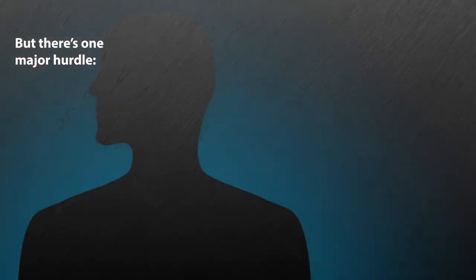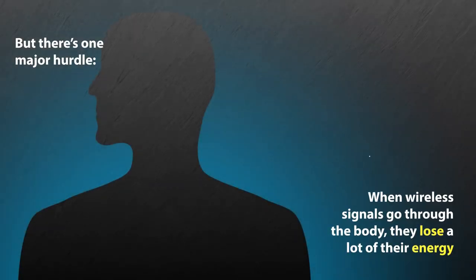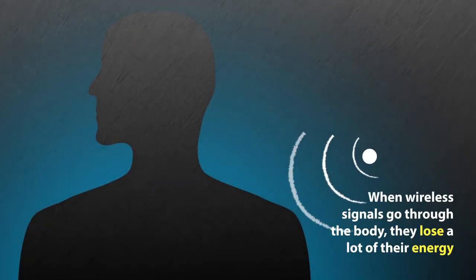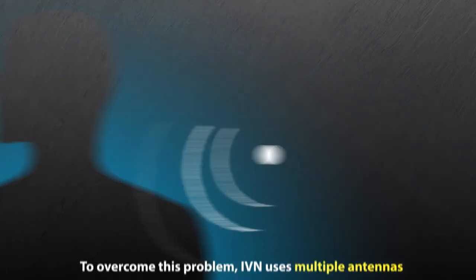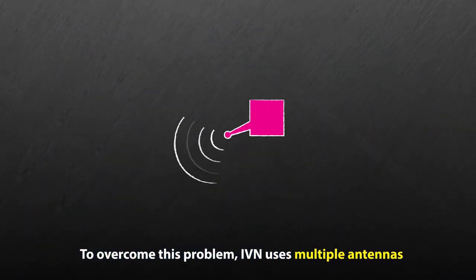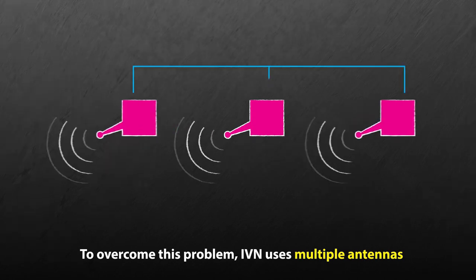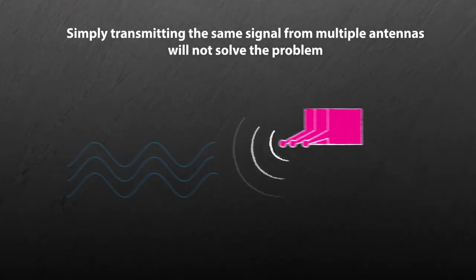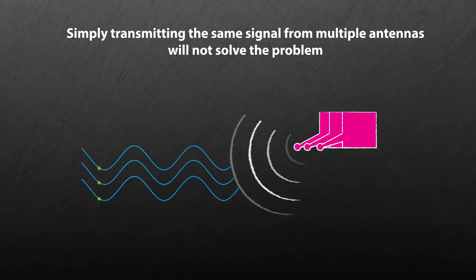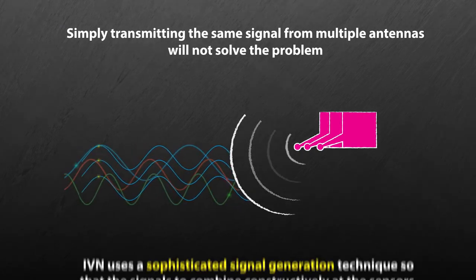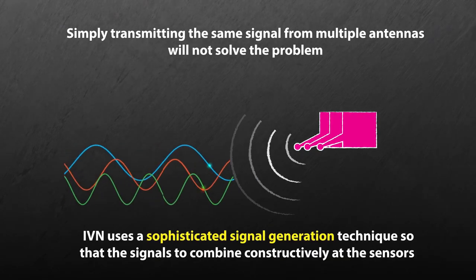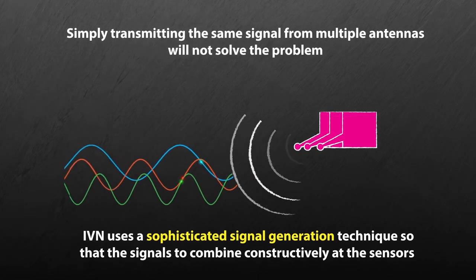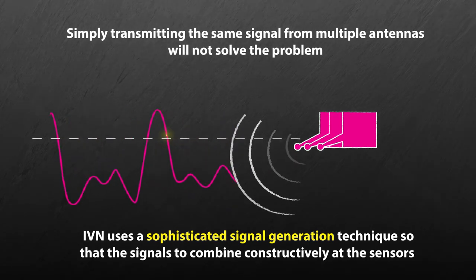But there's one major hurdle. When wireless signals go through the body, they lose a lot of their energy. To overcome this problem while transmitting signals that are safe for humans, IVN uses multiple antennas. But simply transmitting the same signal from multiple antennas will not solve the problem. IVN uses a sophisticated signal generation technique that allows the signals to combine constructively at the sensors.